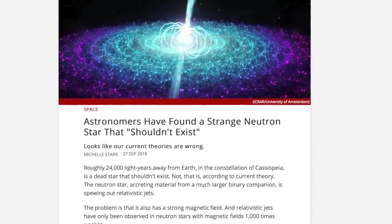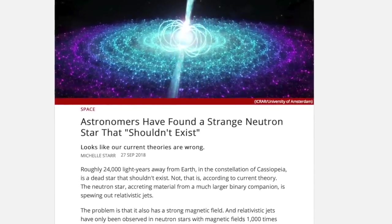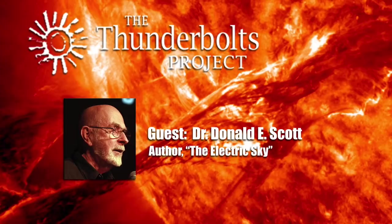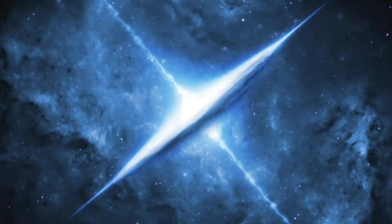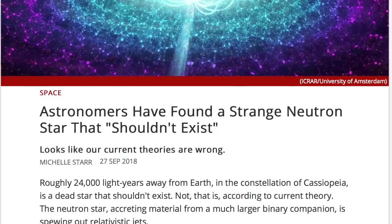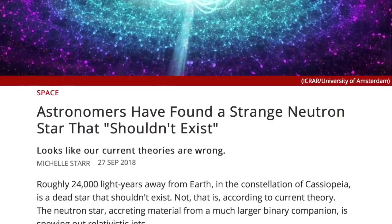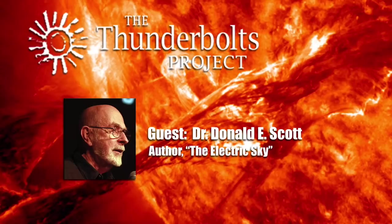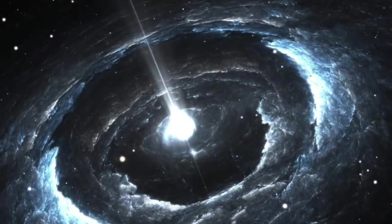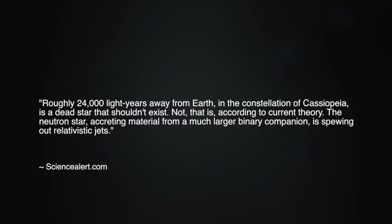I've looked at this press release entitled Astronomers have found a strange neutron star that shouldn't exist. Well, I agree with that title right off the bat, because none of them should exist, and neutron stars don't exist. The subtitle of the article says, Looks like our current theories are wrong. Ah man, yes, most of your current theories are wrong, especially when it comes to something like a neutron star, which doesn't exist in the first place. But the article says that about 24,000 light years away is a dead star that shouldn't exist, not that is, according to current theory.